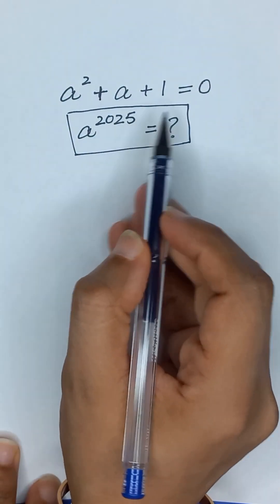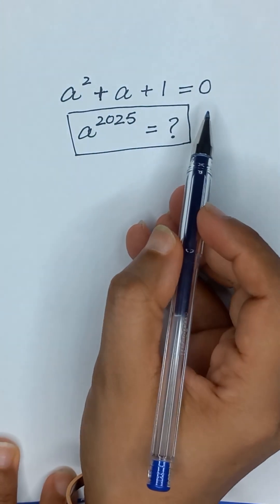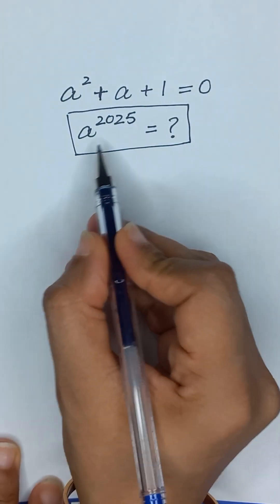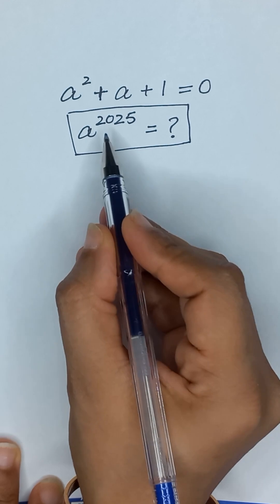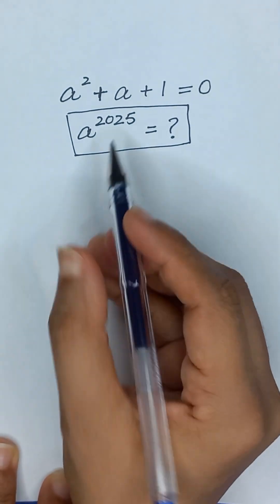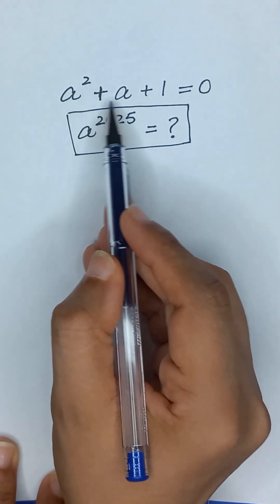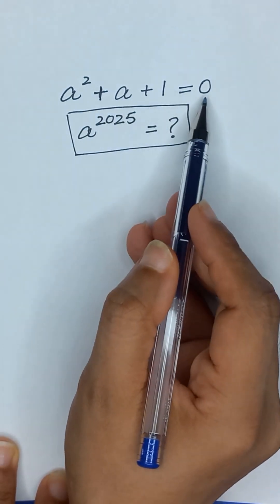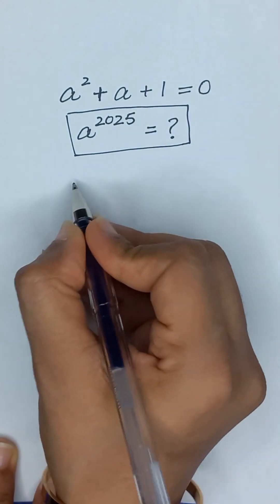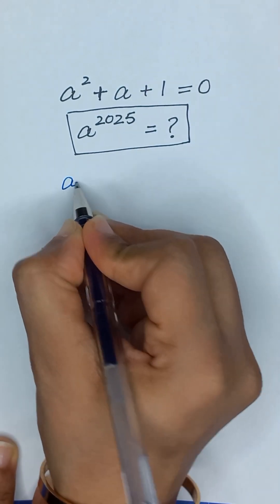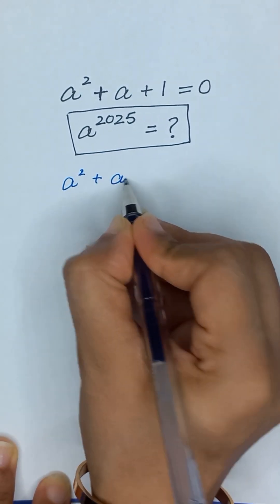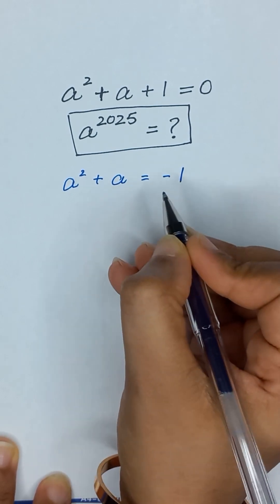A squared plus A plus 1 is equal to 0, and we have to find A to the power 2025. It is given that A squared plus A plus 1 equals 0. We take positive 1 to the right-hand side, so it becomes A squared plus A is equal to minus 1.